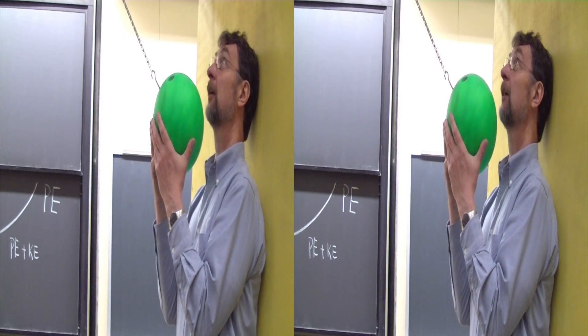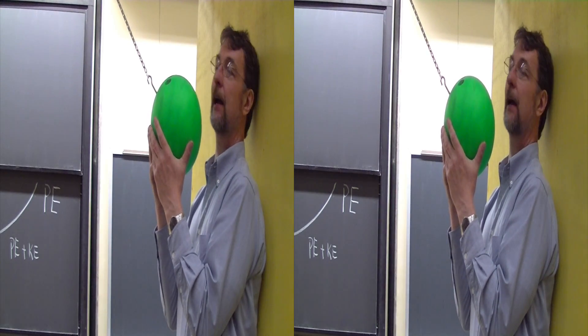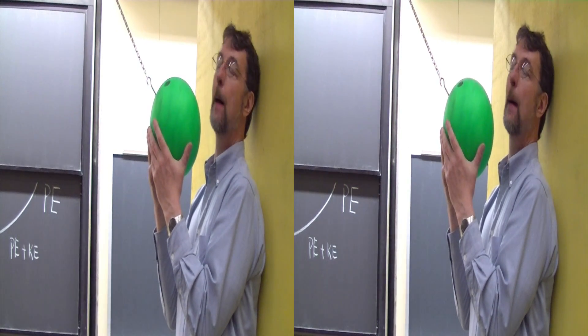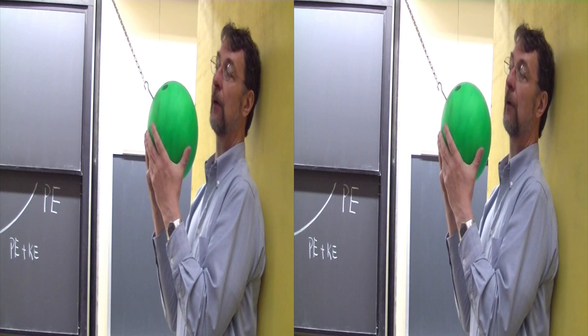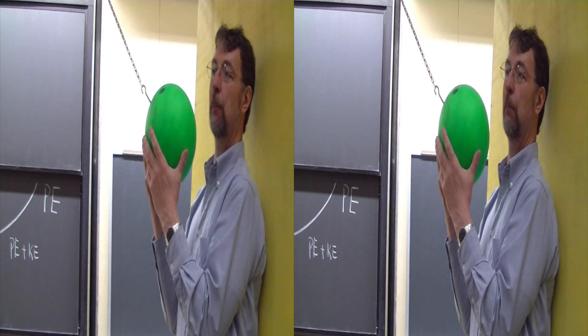It has 120 joules of energy, potential energy, which will be converted into kinetic energy when I let it go, back to potential energy at the other end of the swing, back to kinetic energy at the bottom, and potential back here.